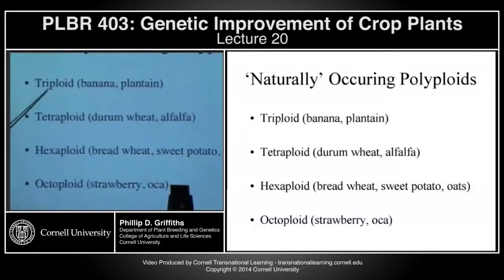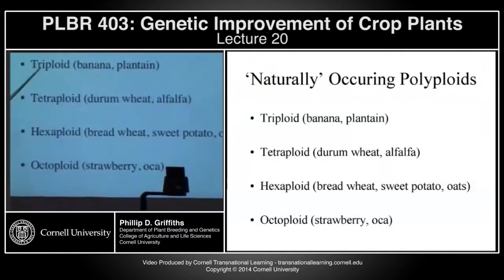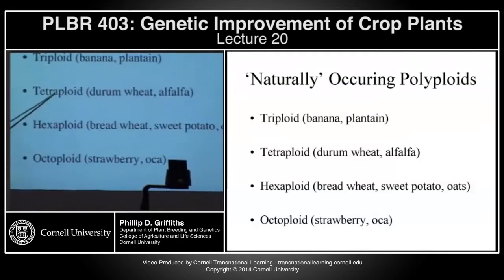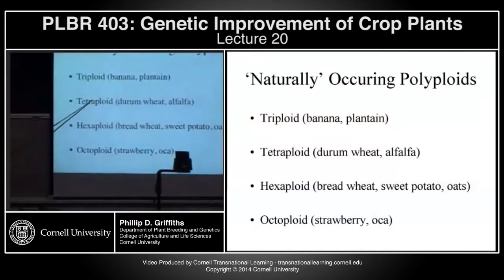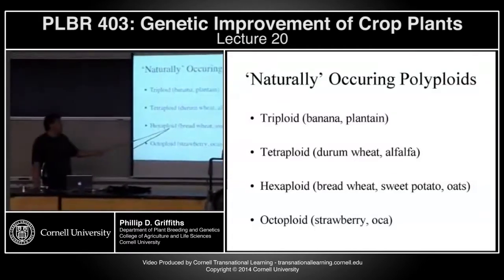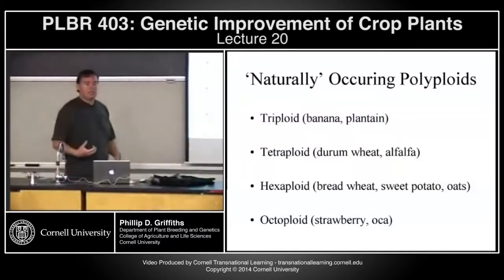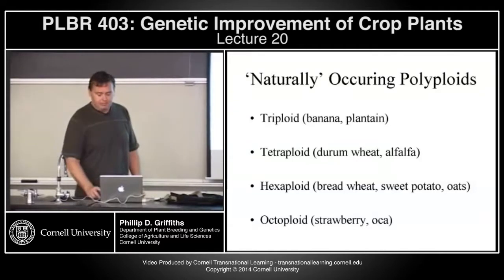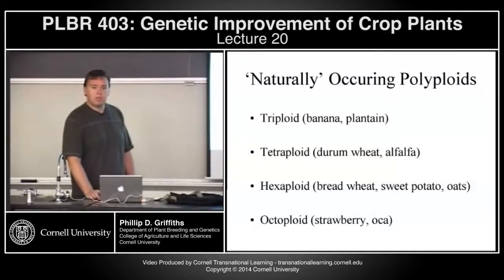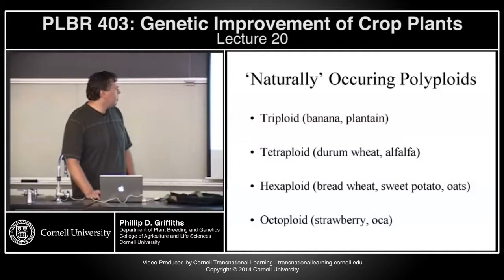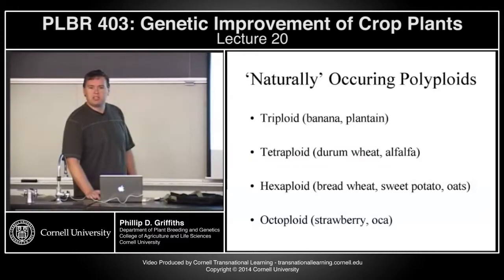We have a number of triploid crops — banana and plantain — and tetraploids with four haploid sets such as durum wheat and alfalfa. We can go up to hexaploids or even octaploids; some plants will sustain a large number of haploid sets. Oats are octaploid as well, and okra is probably also an octaploid — which is a tuber quite different from okra.